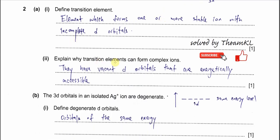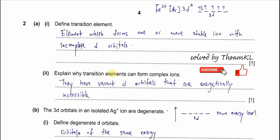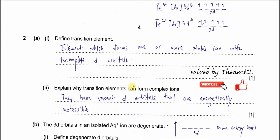Part 2: explain why transition elements can form complex ions. The answer in the mark scheme is that they have vacant d orbitals that are energetically accessible. I am not really in agreement with this answer, because it does not really use the vacant d orbitals correctly — the d orbitals are actually occupied, with electrons in them, so it is not really using vacant d orbitals.